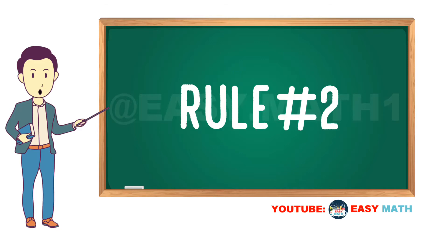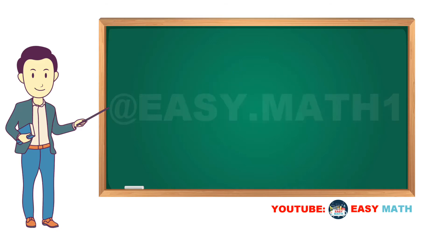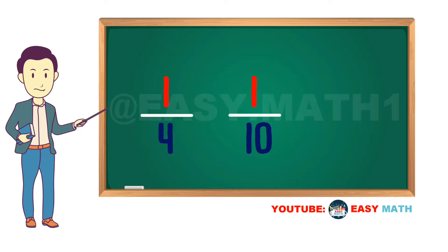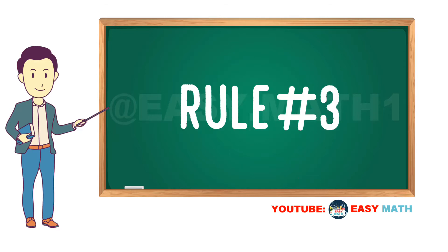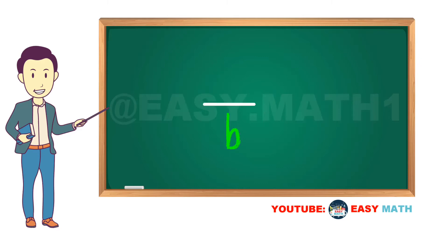Rule number two: a fraction that has a numerator of one, such as one tenth, one quarter, and one seventh, does not simplify any further. Rule number three: no matter what the denominator is, if the numerator is zero, then the entire fraction becomes zero.